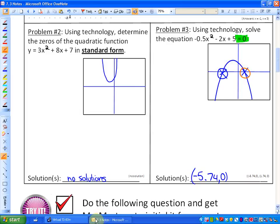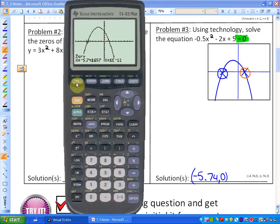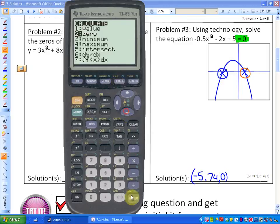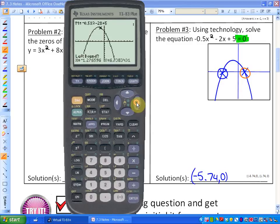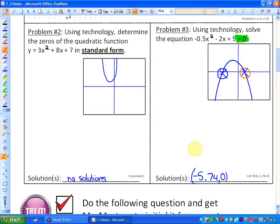And let's go ahead and find this coordinate here. So second trace zero, and I will calculate that. Alright, and there we go. Our other zero is 1.74 and zero. So those are our two values of x that give us an output or a value of y of zero.